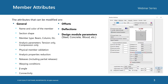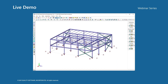In the other tabs, we can specify the offset parameters and deflections, and we find specific tabs for each design module, including steel, concrete, wood, aluminum, composite beams, etc. Without further ado, let's start our demo.